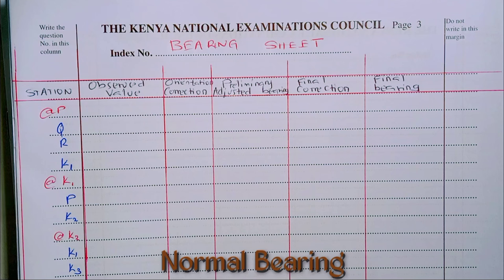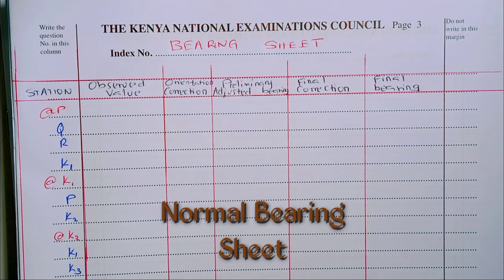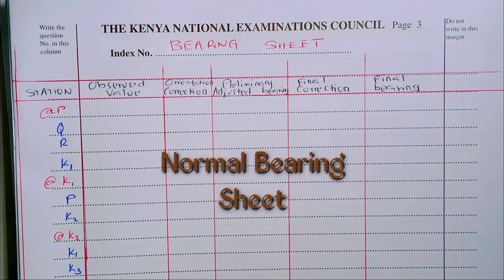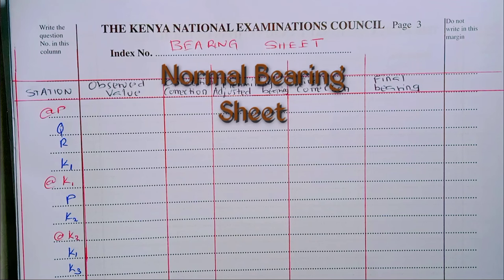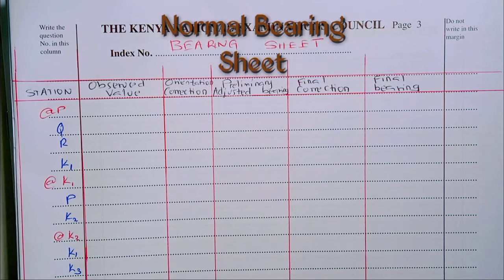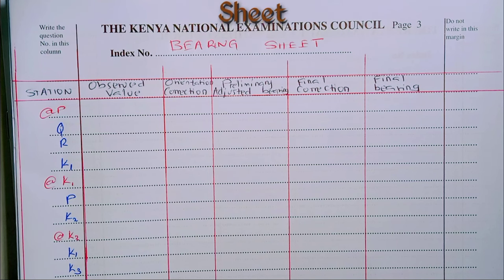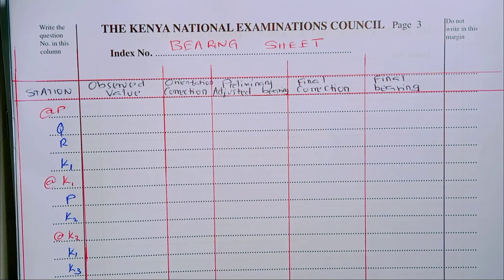Here is a sample of the bearing sheet. We have six columns: the first column has the stations; the second has the observed value; the third has the orientation correction; the fourth has the preliminary adjusted bearings; the fifth has the final correction; and the last column has the final bearings. The stations are obtained from the diagram we read previously. From each station, we note all adjacent stations and write the fore bearings.